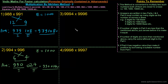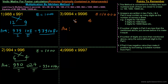The next question is 9994 × 9996. What is the base for this calculation? Since 9994 is closer to ten thousand, the base is ten thousand. So 9994 is six less than ten thousand, and 9996 is four less than ten thousand. In the first part we write the difference: 9994 minus 4, or 9996 minus 6, which is 9990. That is the first part of the answer.